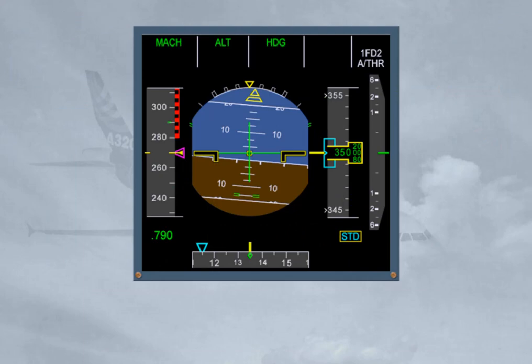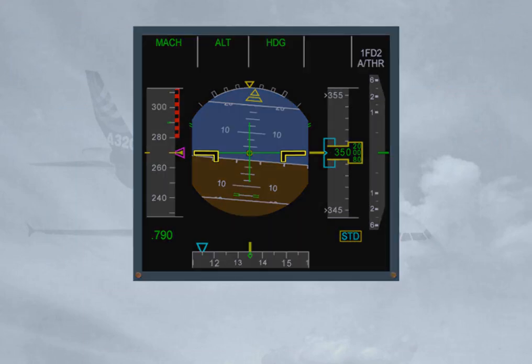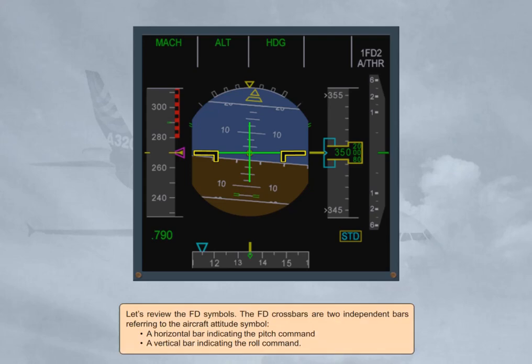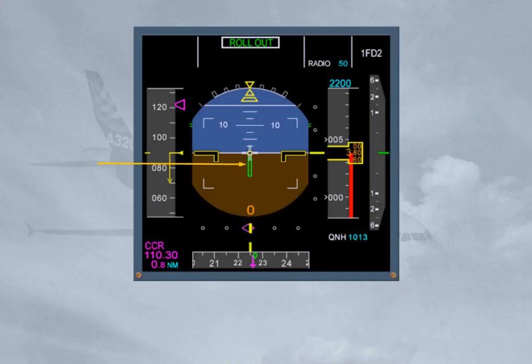Let's review the flight director symbols. The flight director crossbars are two independent bars referring to the aircraft attitude symbol: a horizontal bar indicating the pitch command, and a vertical bar indicating the roll command. The roll bar is replaced by a yaw bar index for take-off and landing rollout functions from an ILS-equipped runway. The yaw bar helps the pilot to properly track the localizer on the ground while in low visibility conditions.